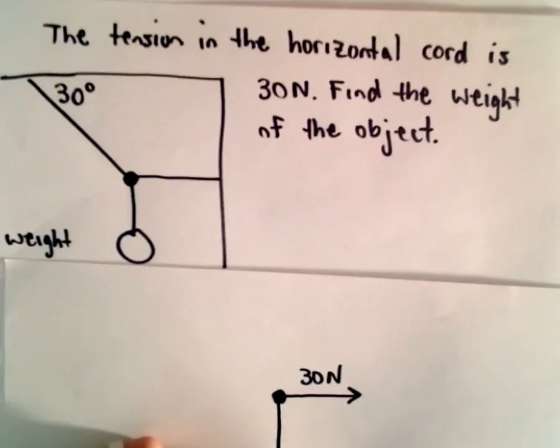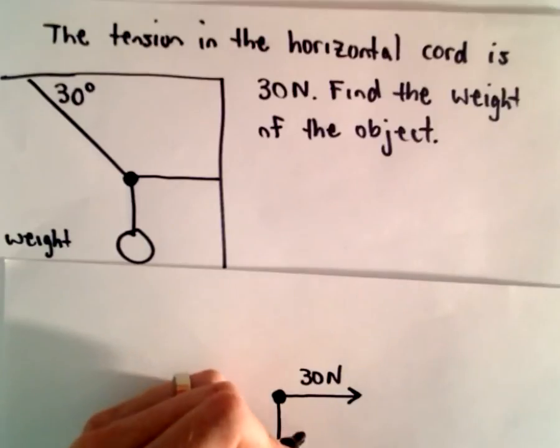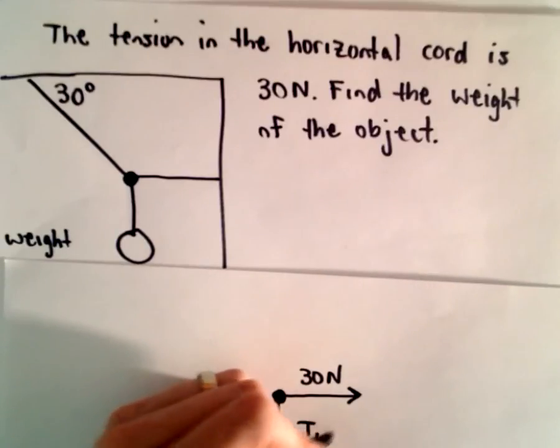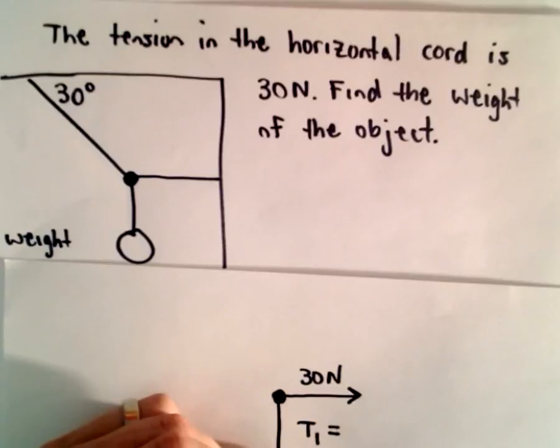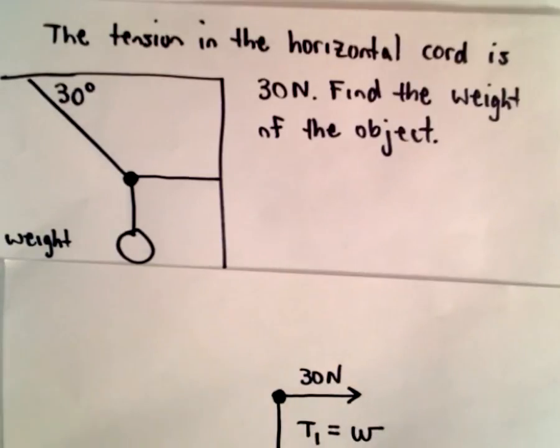Okay, there's also a vector that's pulling it down. Okay, so there's a vector acting in the downward direction here. And the force or the tension, maybe I'll call that cord T1, the tension that would be acting on that cord would simply be the weight of the object.